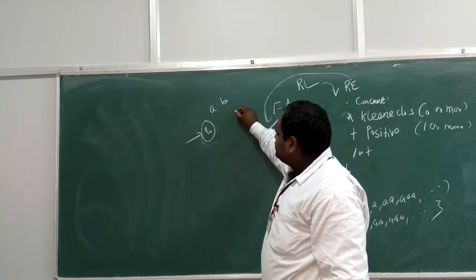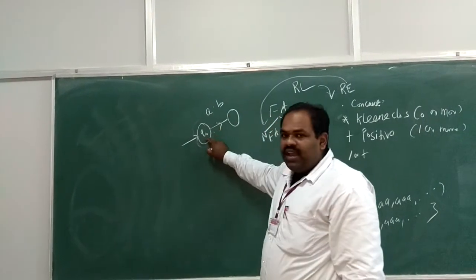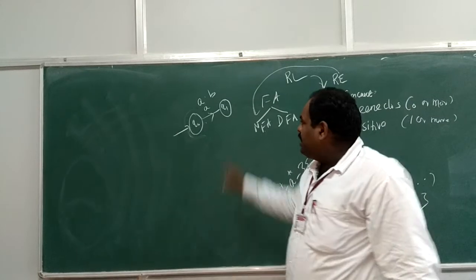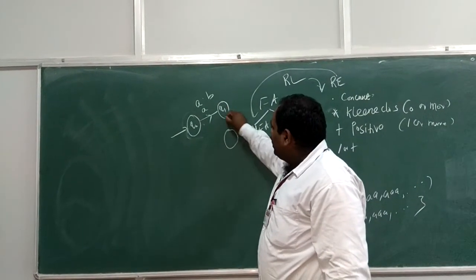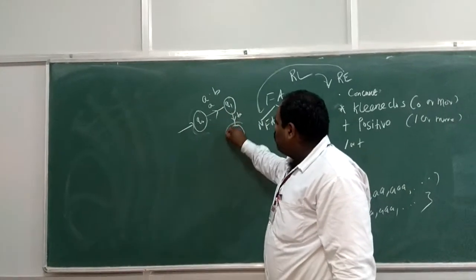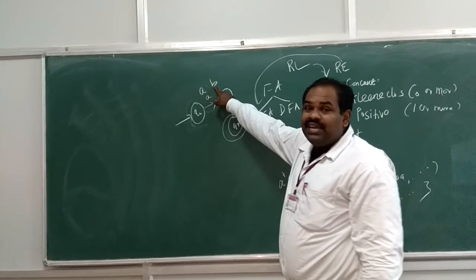Then A is read by this state, and it goes to the Q1 state. Then similarly, if we read Q1, Q1 reads the B. If we read the B, it reaches the Q2 state. So A, B. Now this is marked as a final state. We can start for the A dot B.